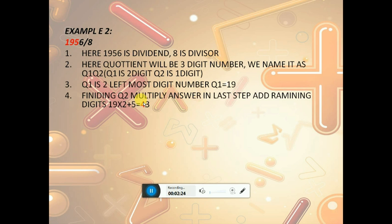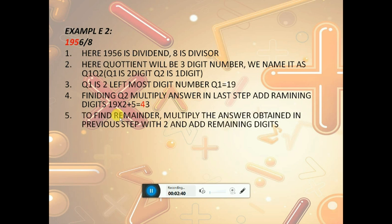Now finding q2: multiply the answer from the last step and add remaining digits. The previous step answer is 19. So 19 times 2 plus 5 (the remaining digit) equals 43.